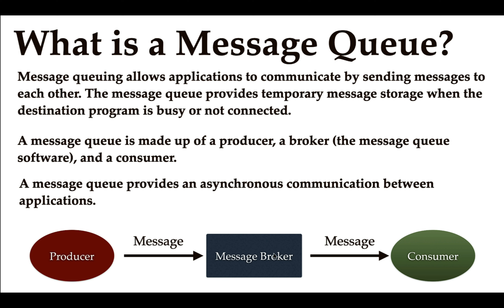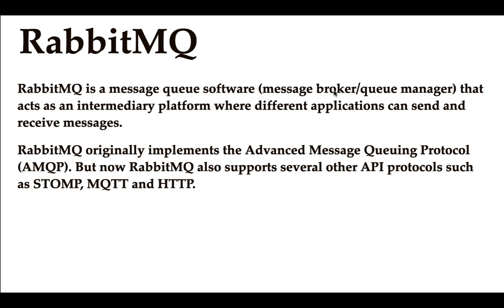The producer produces the message, sends it to the message broker, and the consumer consumes that message from the broker. Message queues are used for asynchronous communication — the producer sends a message to the broker and doesn't have to wait for a response; it can proceed with other tasks. This is how asynchronous communication happens between multiple applications.